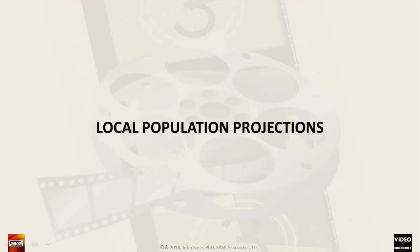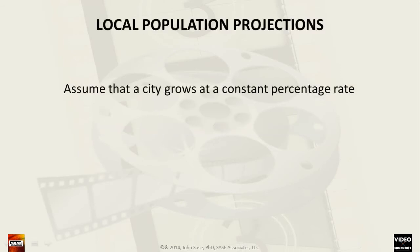Following this method, we will estimate the compounding average annual growth rate for an urban area. U.S. Census populations are taken every 10 years. Given that information, we start by dividing a recent census population by one from a decade earlier.